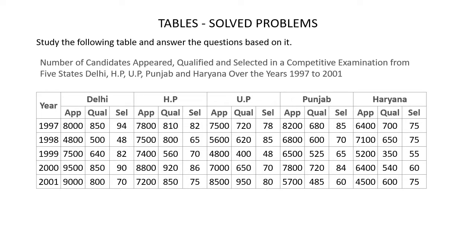For 1997, in Delhi, the number of candidates that appeared is 8000, number that qualified is 850 and number that got selected is 94. For the year 1998 for Delhi, the number that appeared is 4800, qualified is 500 and selected is 48. Similarly for the other years and for the other states.